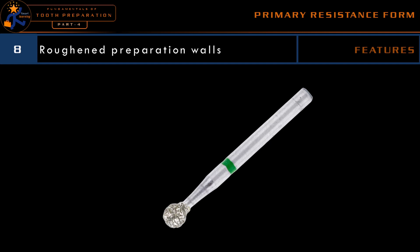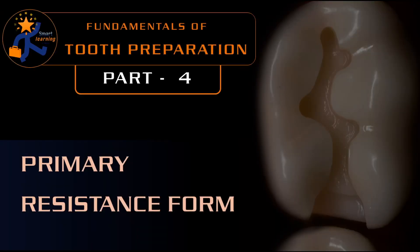So that brings us to the conclusion of the primary resistance form. Primary resistance form emphasizes two points: the tooth has to be strong and the restoration has to be strong. For the tooth to be strong, we have to provide a box shape of the cavity, a flat pulpal floor, and rounded internal line angles. For the restoration to be strong, we have to provide adequate thickness of the restoration.